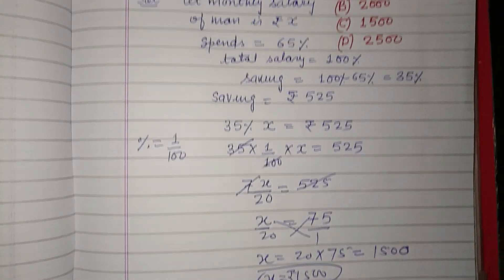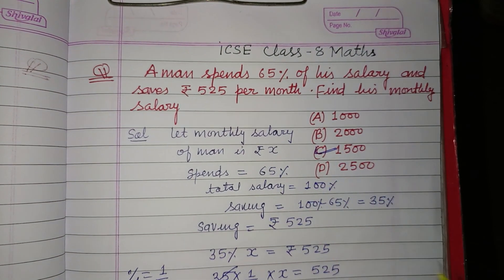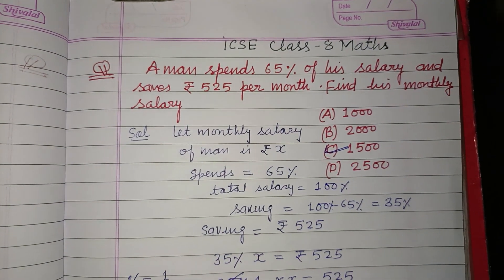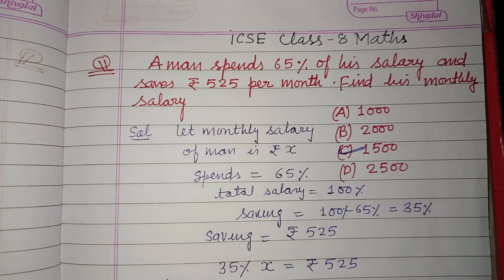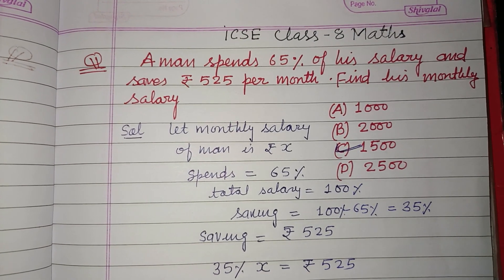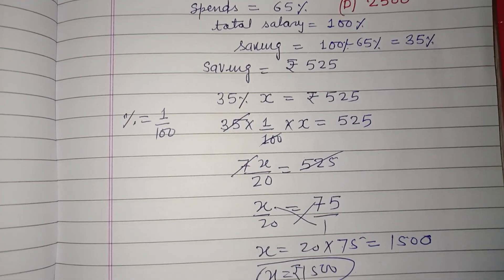The monthly salary of the man is rupees 1500, which corresponds to option C. So option C is correct. I hope you got it. Please like the video, subscribe to the channel. Thanks for watching.